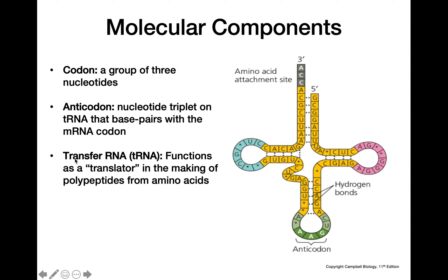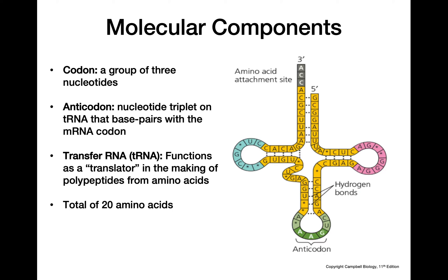We also have transfer RNA, which functions as the translator — translating the information held in the codons on the mRNA molecule into an actual amino acid sequence on a polypeptide. There are a total of 20 amino acids, but we have more than 20 kinds of tRNAs, because multiple codons can code for the same amino acid. We need tRNAs with anticodons that reflect those differences, which is why we have more than 20 tRNAs even though there are only 20 amino acids.